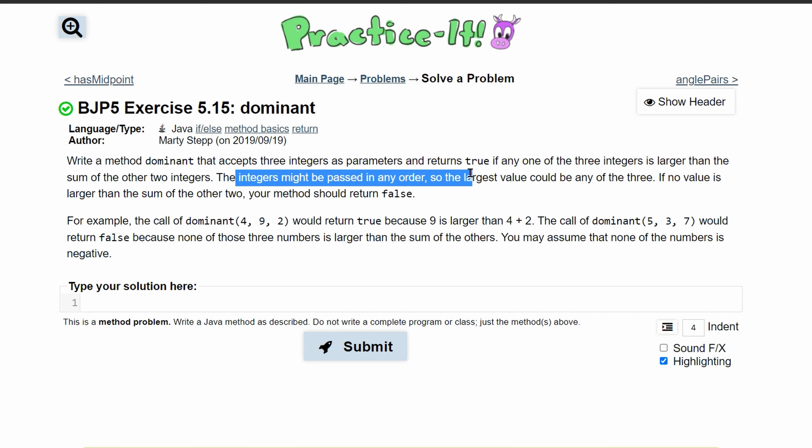The integers can be passed in any order, so the largest value could be any of the three. If no value is larger than the sum of the other two, we return false.